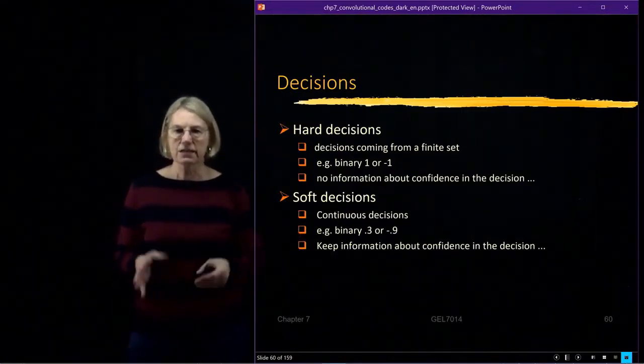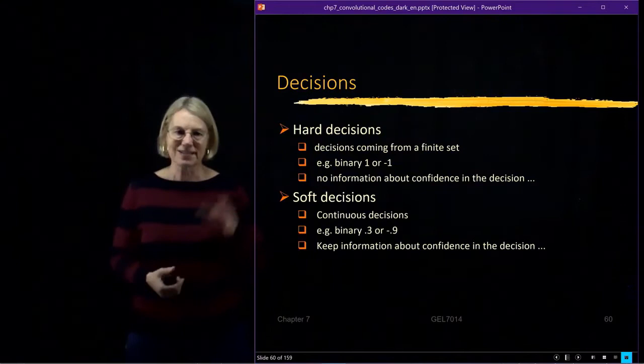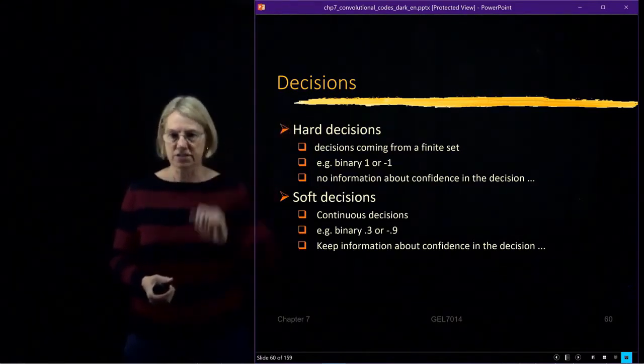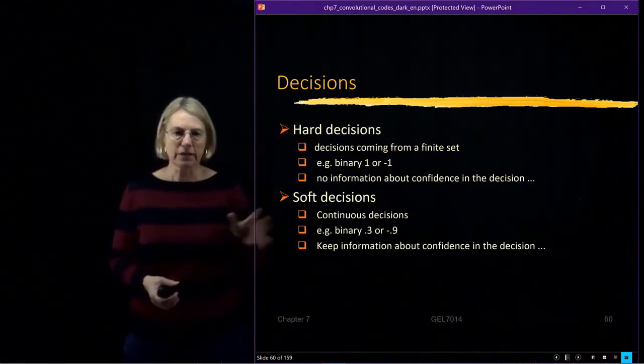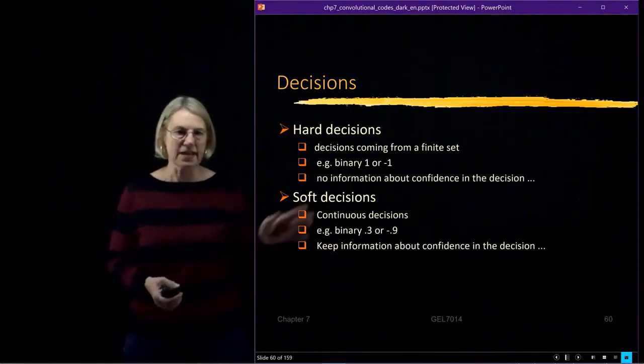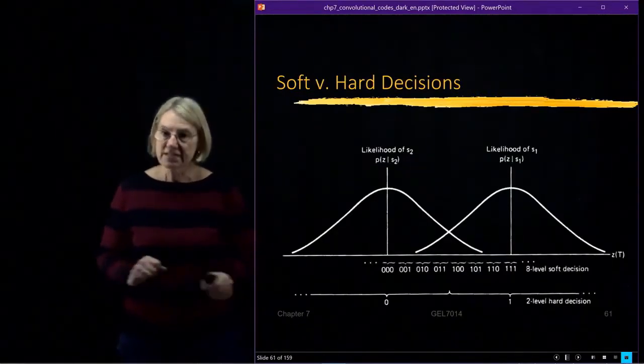So we're going to stick, in this chapter 7, to examples from hard decisions. And we'll talk a little bit about soft decisions and maybe see some examples later on. But both exist.